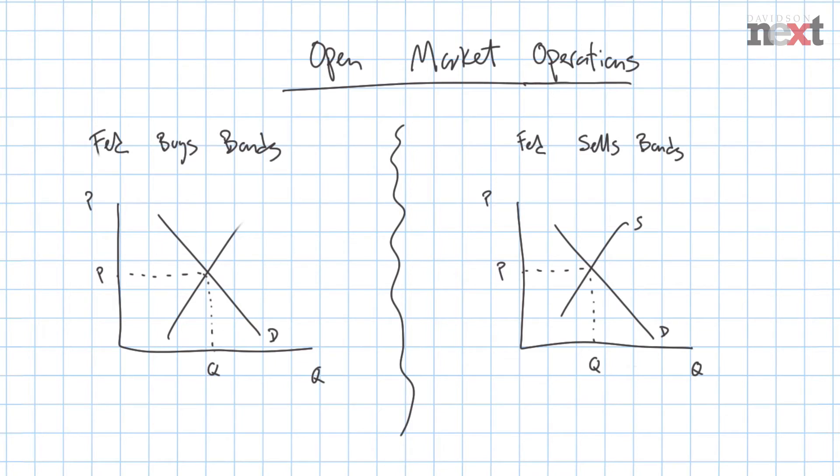Let's take a look at what happens on the left here when the Fed tries to be a buyer of bonds. When the Fed enters the bond market as a buyer, it increases the demand for the bonds it's trying to buy. When it pushes demand to the right, that increases the number of bond transactions that happen and drives up the price of the bonds that the Fed is targeting.